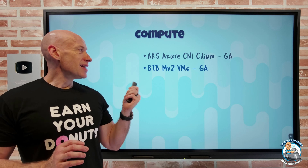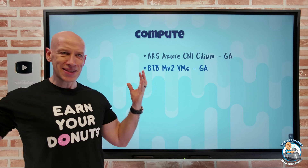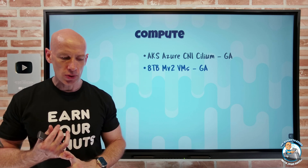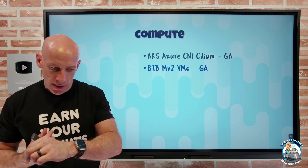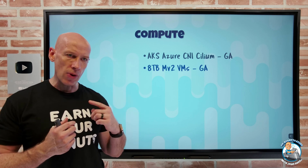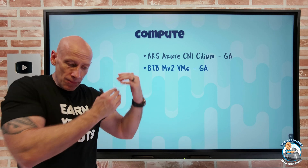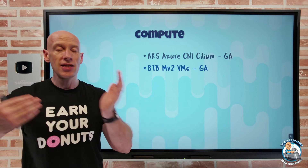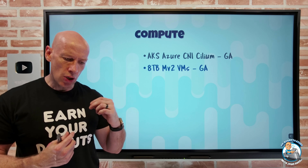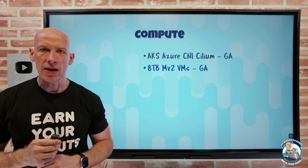I now have 8 terabyte MV2 virtual machines in GA. These are monster-sized virtual machines. With this 8 terabyte option, it's 416 virtual CPUs, 7.6 GB of memory, 4 terabytes of virtual storage, and 32 gigabits per second of network bandwidth. This offering sits in between the existing 6 tebibyte and 12 tebibyte options. Obviously this is a huge amount of memory, really focused on scenarios where it's some in-memory workload and you just need a massive amount of memory available.